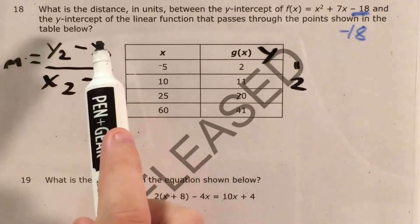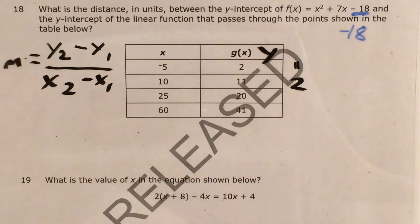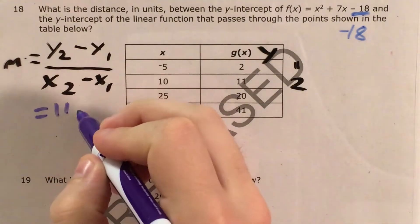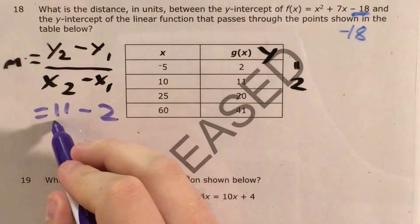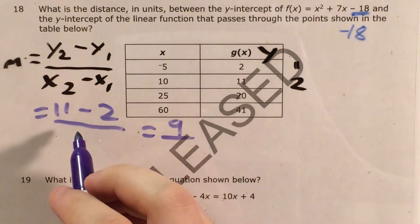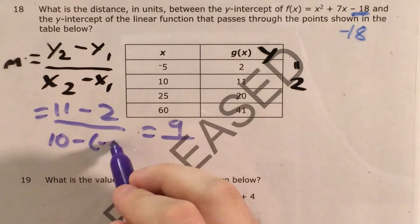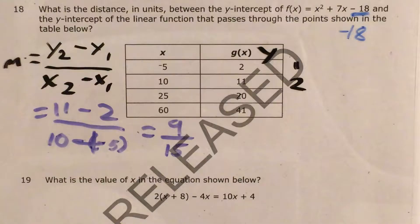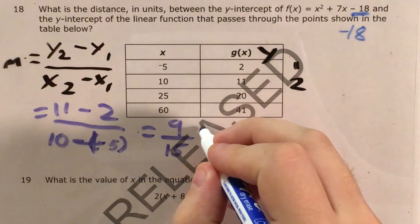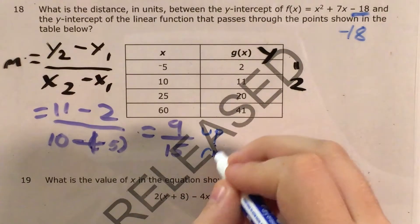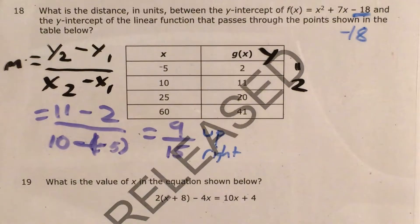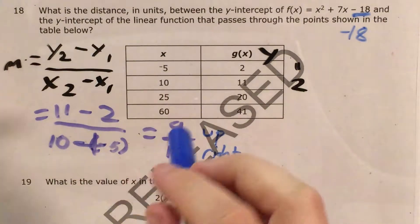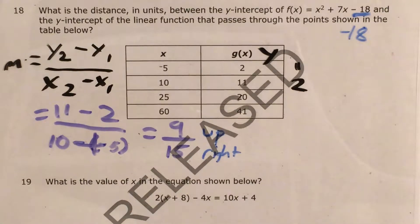Essentially we're looking for how much y changes and dividing it by how much x changes. So let's figure out how much each of our variables are changing. y2 is 11 minus y1, which is 2 — that's going to get me 9 over something. And now x2, 10 minus x1, negative 5. 10 minus negative 5 is the same thing as 10 plus 5, which is 15. So I know that I'm going 9 units up for every 15 I'm going right. I'm going to go ahead and simplify this, because 9 and 15 are both multiples of 3.